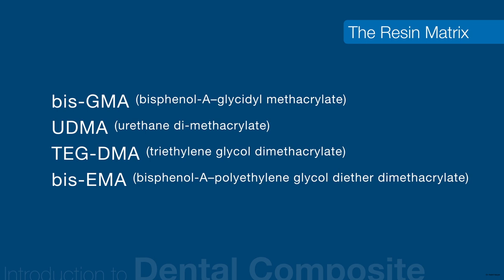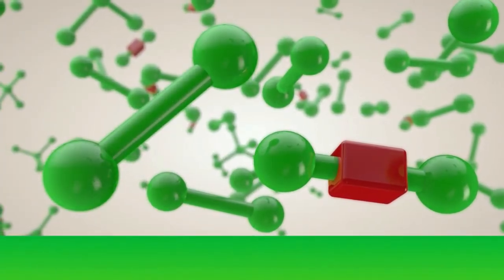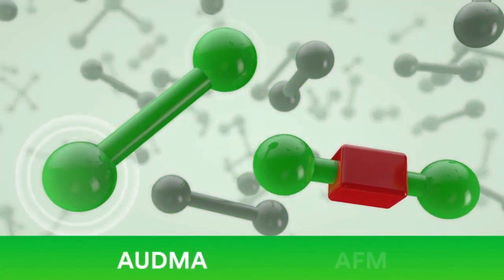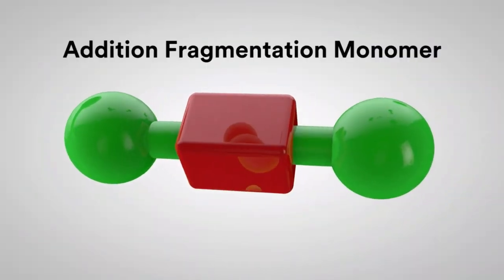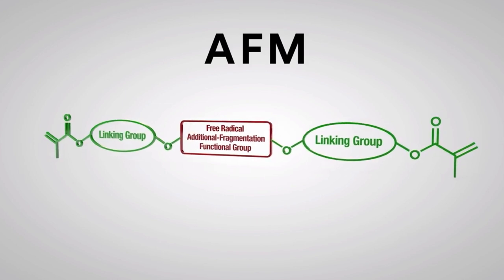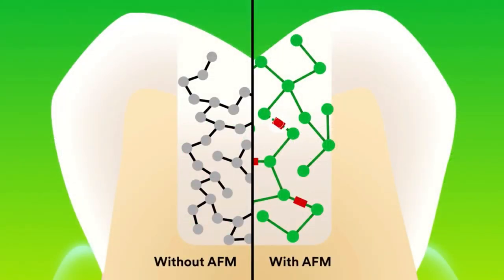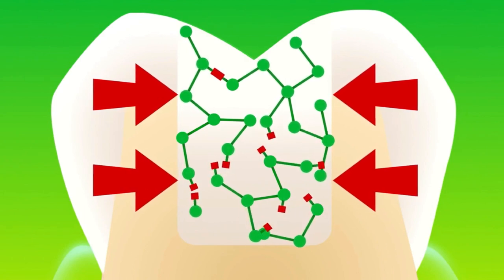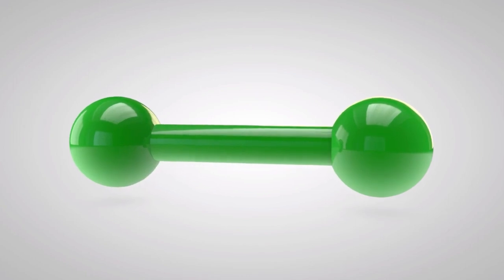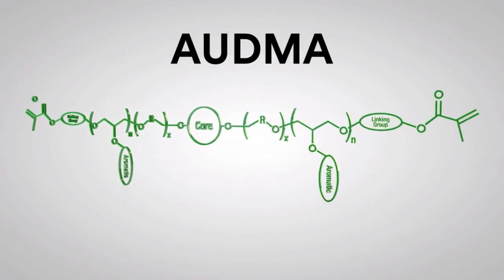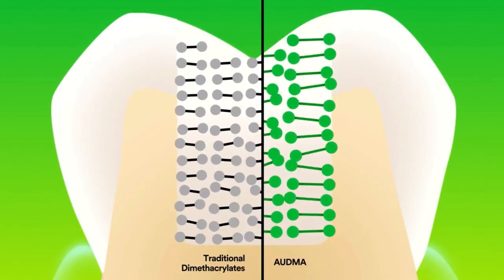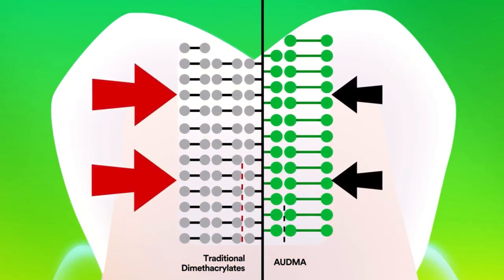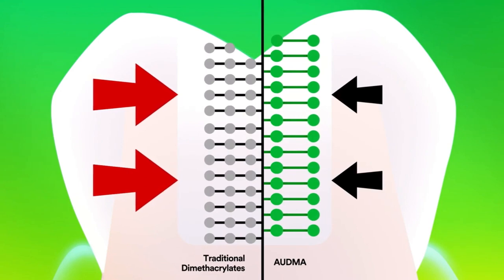Two additional proprietary monomers have been introduced in bulk-fill composites by 3M Corporation. The addition-fragmentation monomer is a low-molecular-weight monomer that reduces viscosity and enhances filler loading; during curing it breaks bonds under shrinkage load and recreates them to minimize shrinkage stress from inside the matrix. The other is aromatic urethane dimethacrylate — a very high molecular weight monomer, higher than Bis-GMA — which also helps reduce overall volumetric shrinkage.